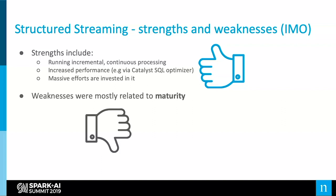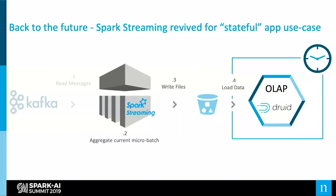Just to summarize the weaknesses and strengths of structured streaming in my opinion: strengths include running incremental continuous processing so the state is managed for you, increased performance via the Catalyst optimizer, and massive amounts of effort invested throughout the open source community. However, weaknesses were mostly related to maturity. So we had to kind of go back to the future, and for us that meant reviving Spark streaming for stateful use cases as well.